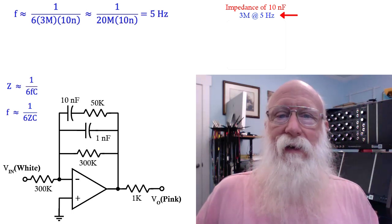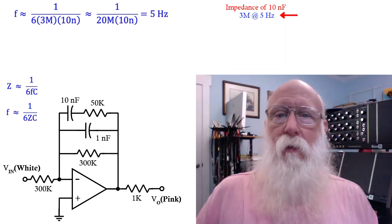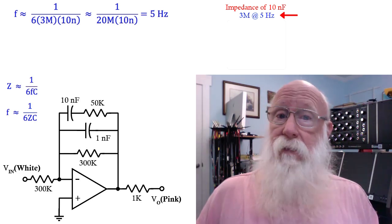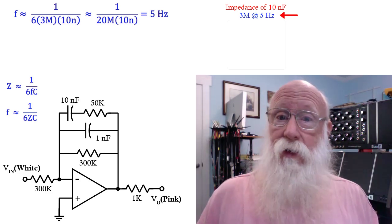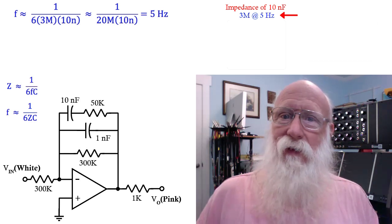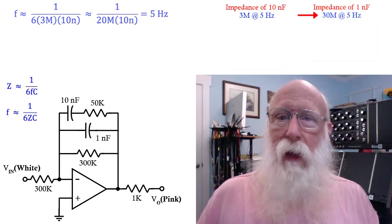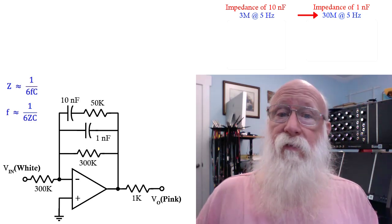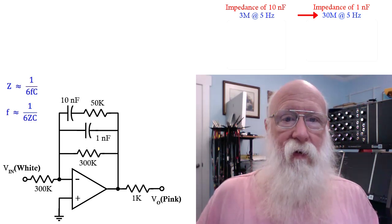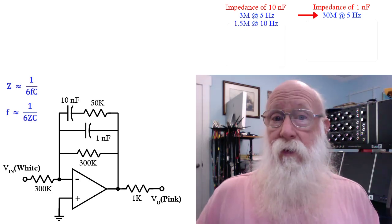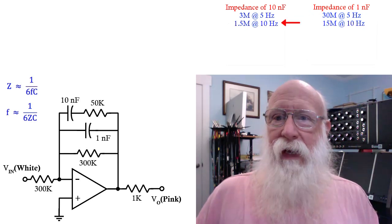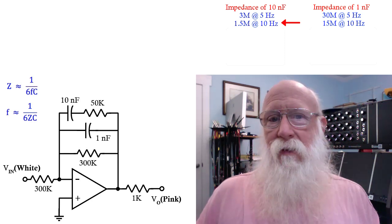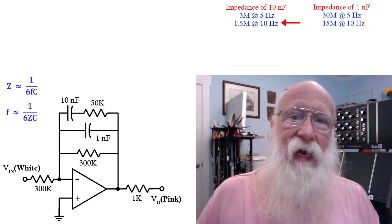We're not trying to get an accurate description here. We're just trying to wrap our heads around how this circuit works. Also note while we're here that the impedance of the 1 nanofarad is going to be 10 times the impedance of the 10 nanofarad, so it's considerably larger. Now, as frequency starts going up above 5 hertz, if you double that to 10 hertz, then the impedance is going to be cut in half to 1.5 megohms, and that's still a good bit larger than 300K. The response will start falling off, but not very fast.